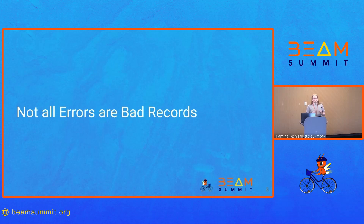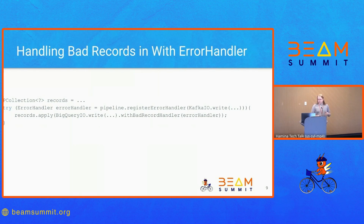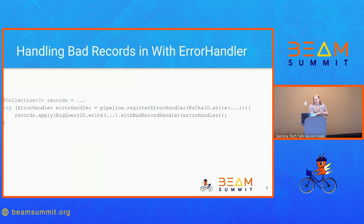This is now supported in Beam in most of the tier-one IOs. You can take your records, construct an error handler, and pass that error handler into the IO you're using. You register an error handler with the pipeline, and then when configuring your BigQuery IO write, you simply say: put all the bad records into this error handler. Any time you fail to write to BigQuery due to malformed data — BigQuery can differentiate between temporary connectivity issues and a record that doesn't match the table schema — it'll send it off to a Kafka IO to be emitted on a configured Kafka topic.